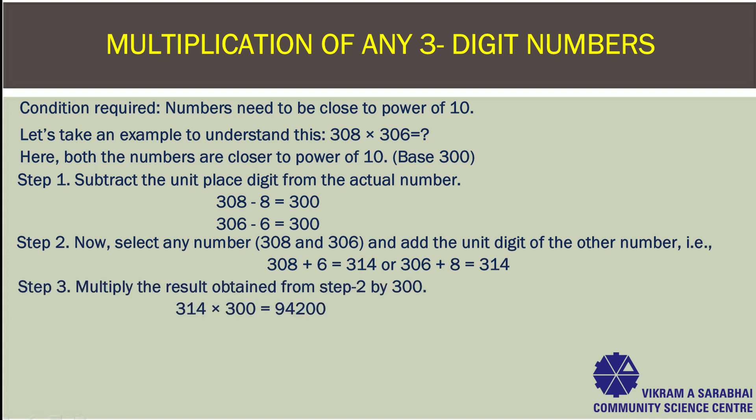Step 3: Multiply the result from Step 2 by base 300. So from Step 2, 314 multiplied by base 300, you get 94200. Step 4: Multiply the unit digits of both numbers. That is 8 from 308 and 6 from 306 — 8 multiplied by 6, you get 48.